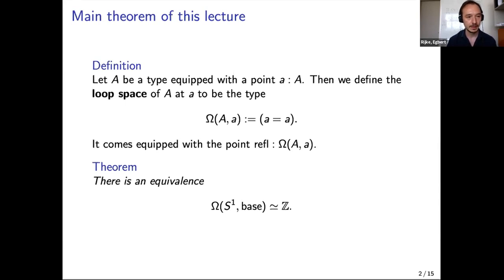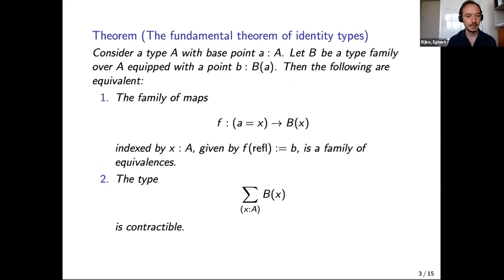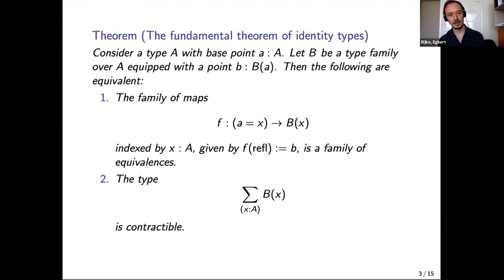We're going to characterize identity types and the main theorem for that is what I call the fundamental theorem of identity types. It says: if you have a type A and a base point little a, and you want to know what the type 'a equals x' is for arbitrary x in A, your idea might be some type family B over A.